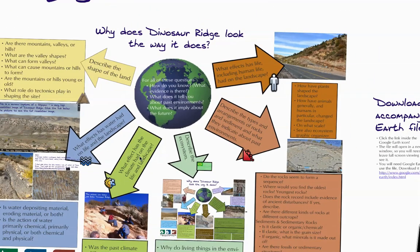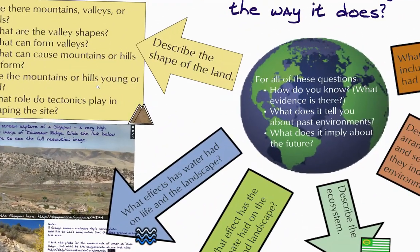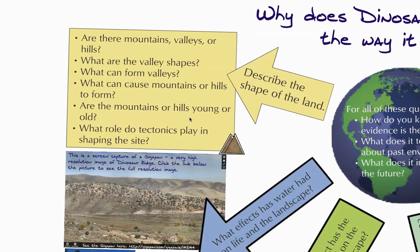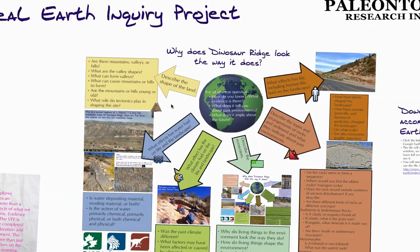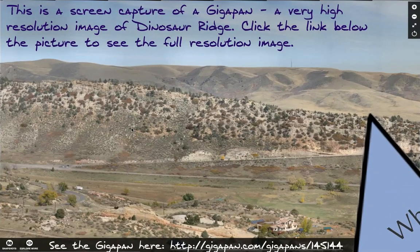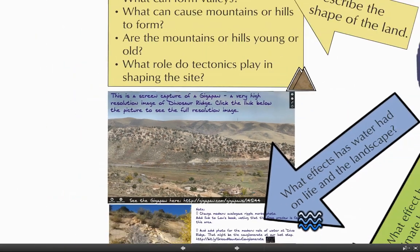There are, for the Earth Science Graphic Organizer, a series of six what we call arrow level questions, which are phrased generically and can be asked about anywhere, with supporting questions that can also be asked about any site. You can customize it to your own site. Here we're looking at information from Dinosaur Ridge. This is a screen grab of a GigaPan — you can click there and load it, but we'll actually look at that from within Google Earth.